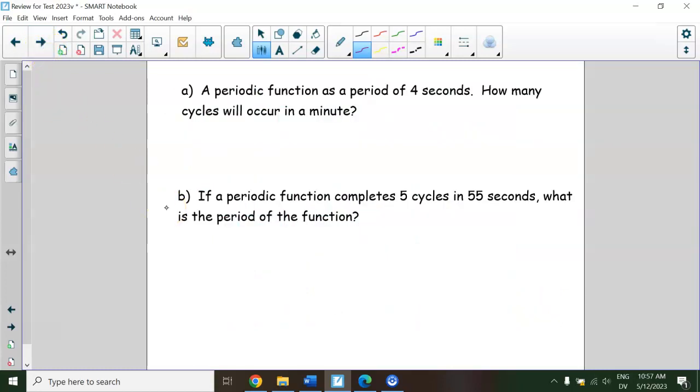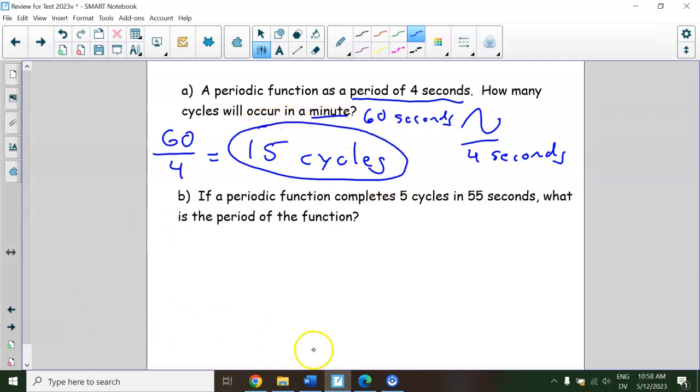Just a different style of question, and there is something along these lines on the test. So pause the video and see if you can make some sense of it. Answer A, it says the period is 4 seconds. That means it'll do one cycle in 4 seconds. And we've got 60 seconds to work with. A minute is 60 seconds. So this is just going to be a divide one. If one cycle takes 4 seconds and we have 60 to work with, just do 60 divided by 4 per cycle, and that means you'll get 15 cycles.